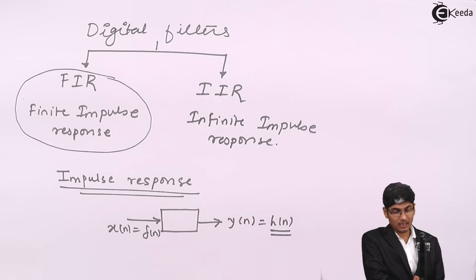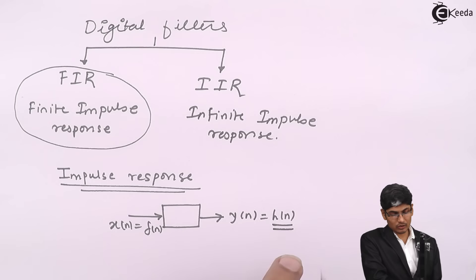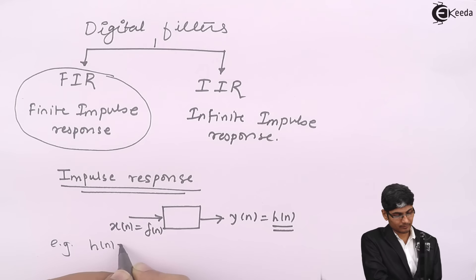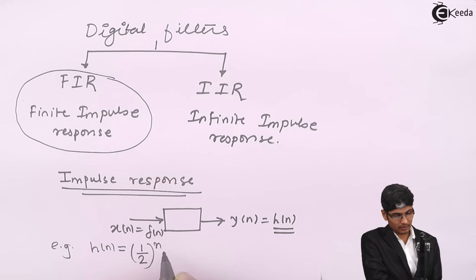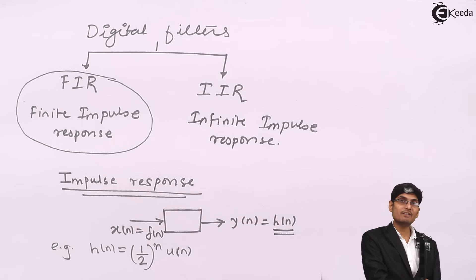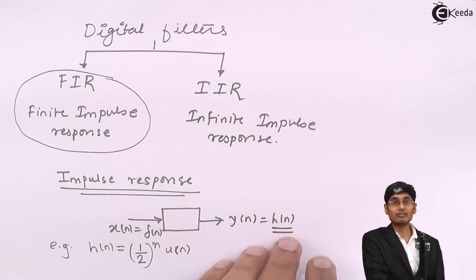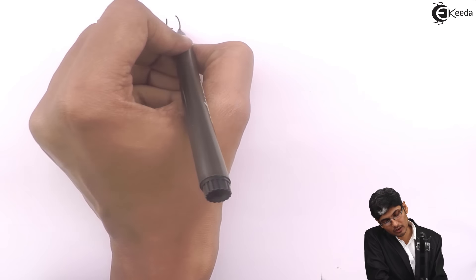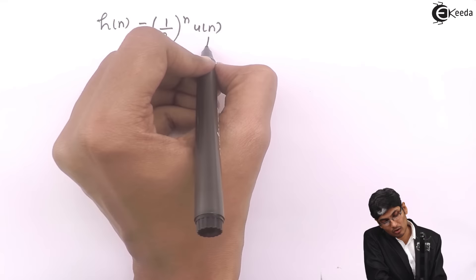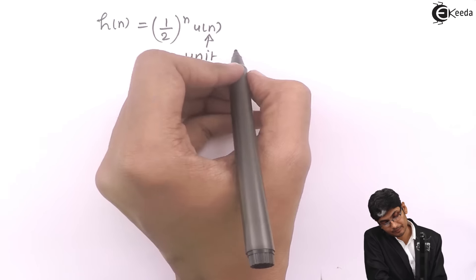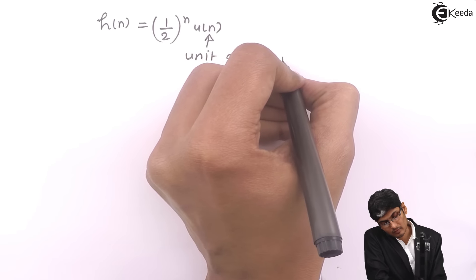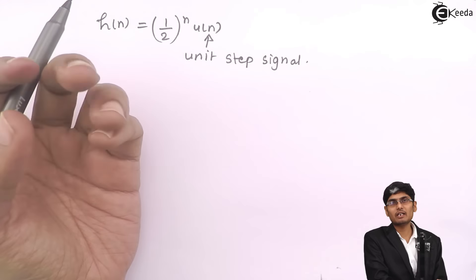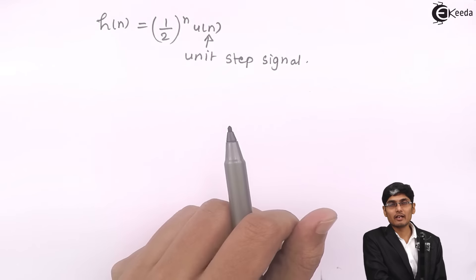Finite impulse response means that my H(n) will have finite samples, or H(n) will be a finite set. For example, if I write H(n) as (1/2)^n · u(n), then this is not a finite response, because u(n) is a unit step signal which extends to infinity. So, if I go on putting the value of n, I will get every time a new value of H(n) and it will extend to infinity.